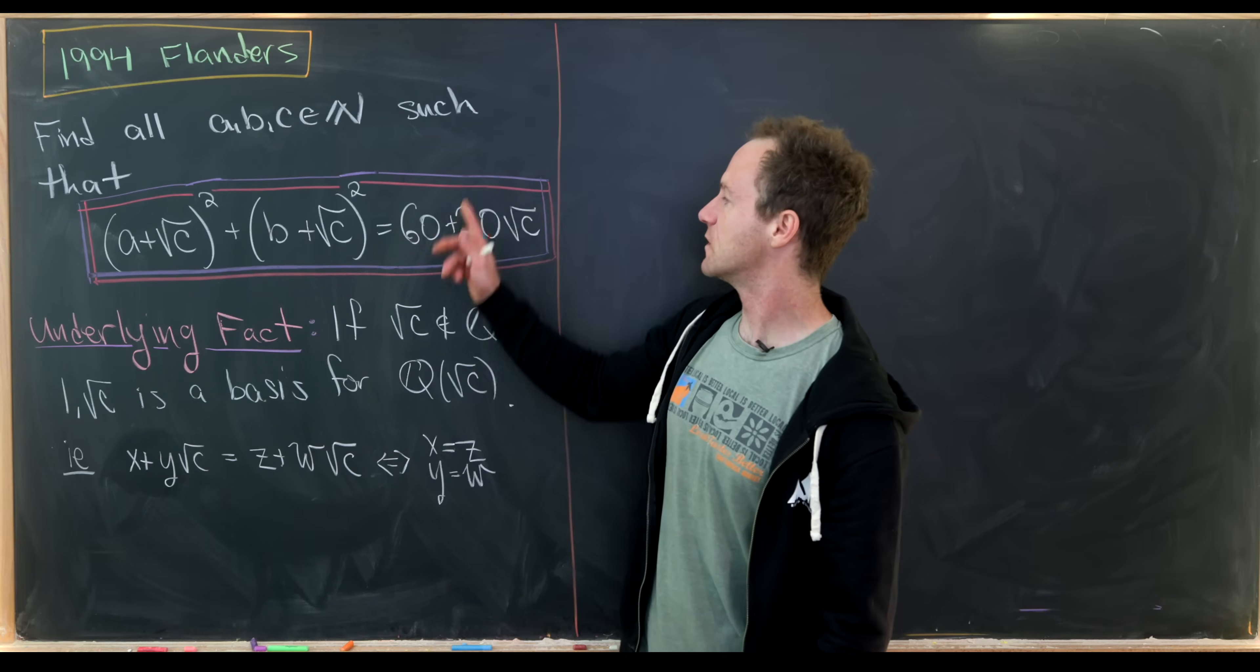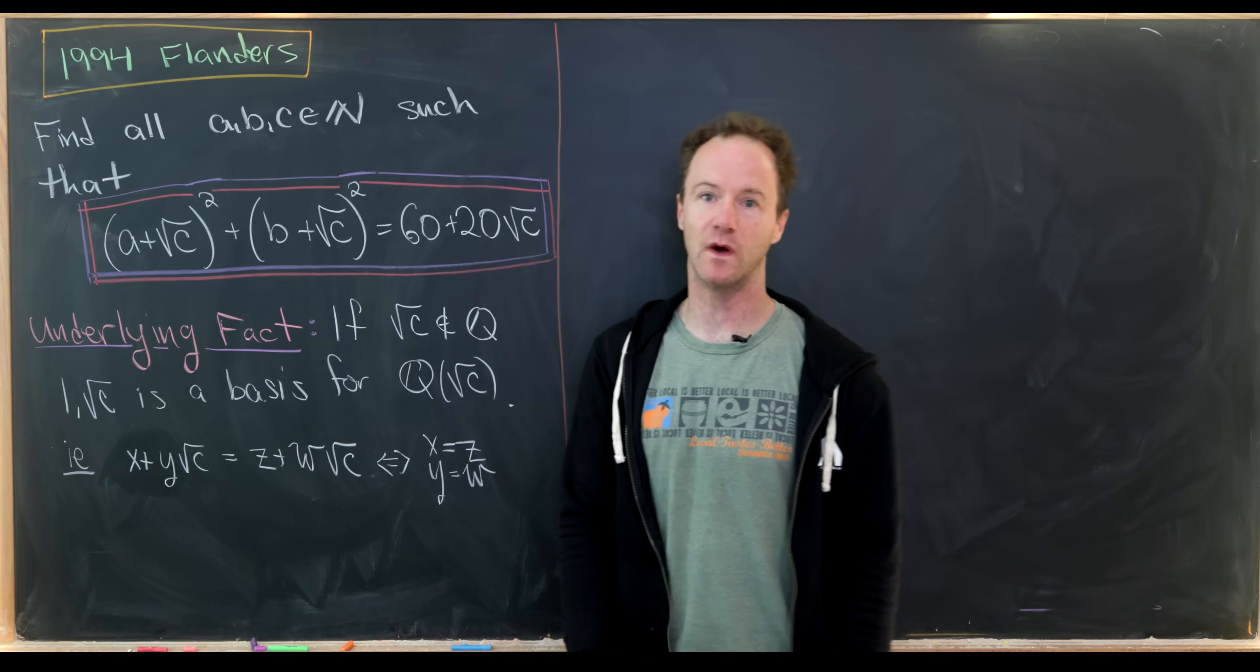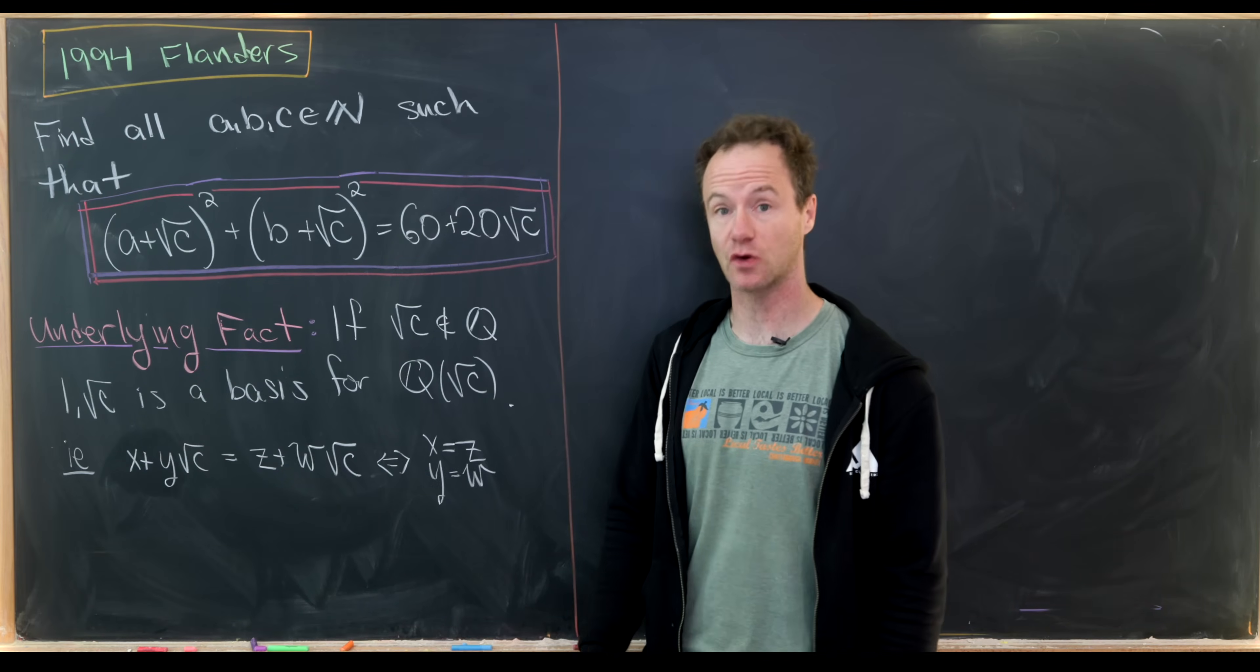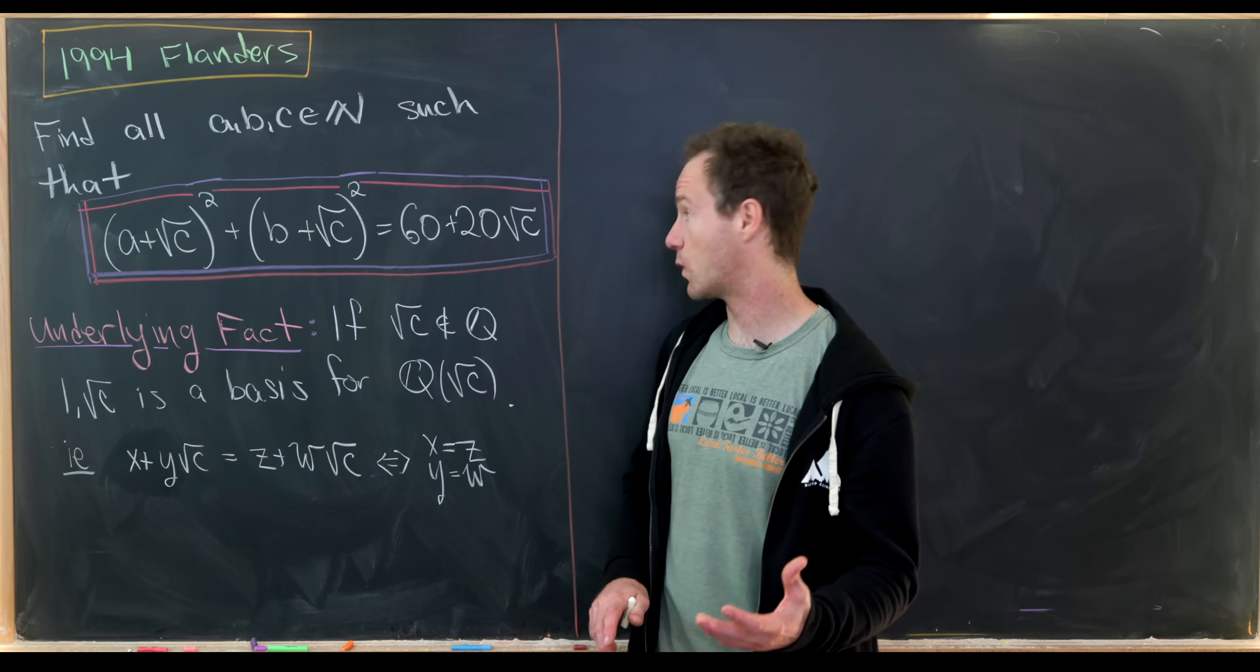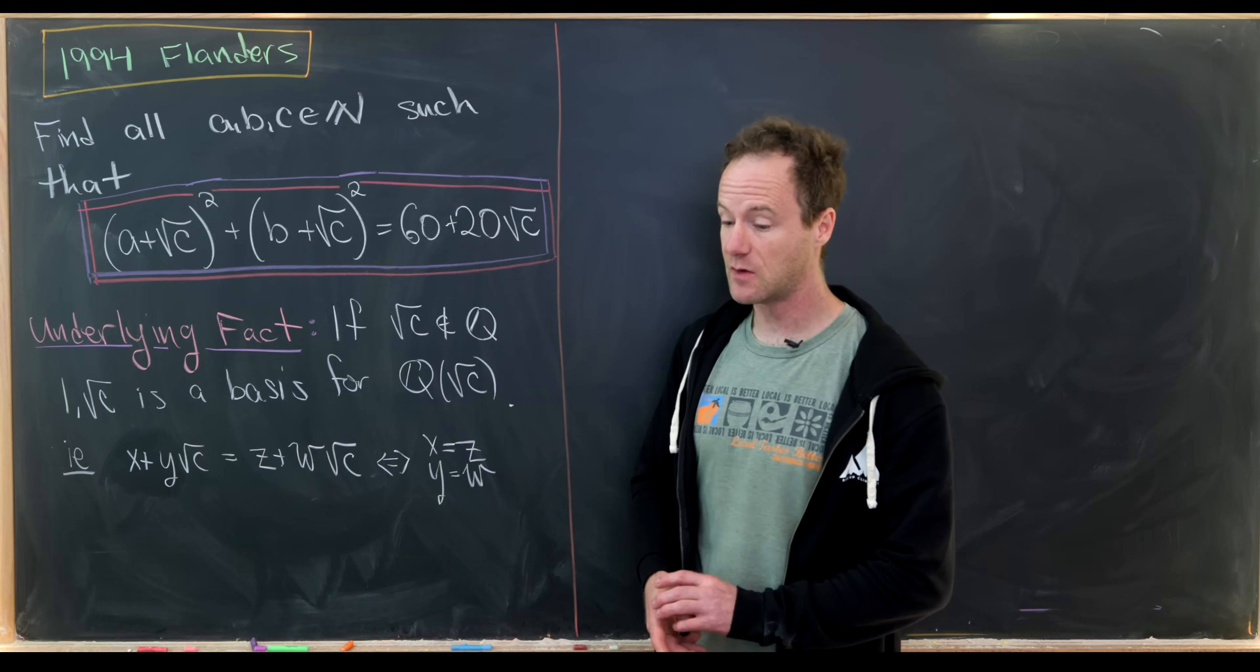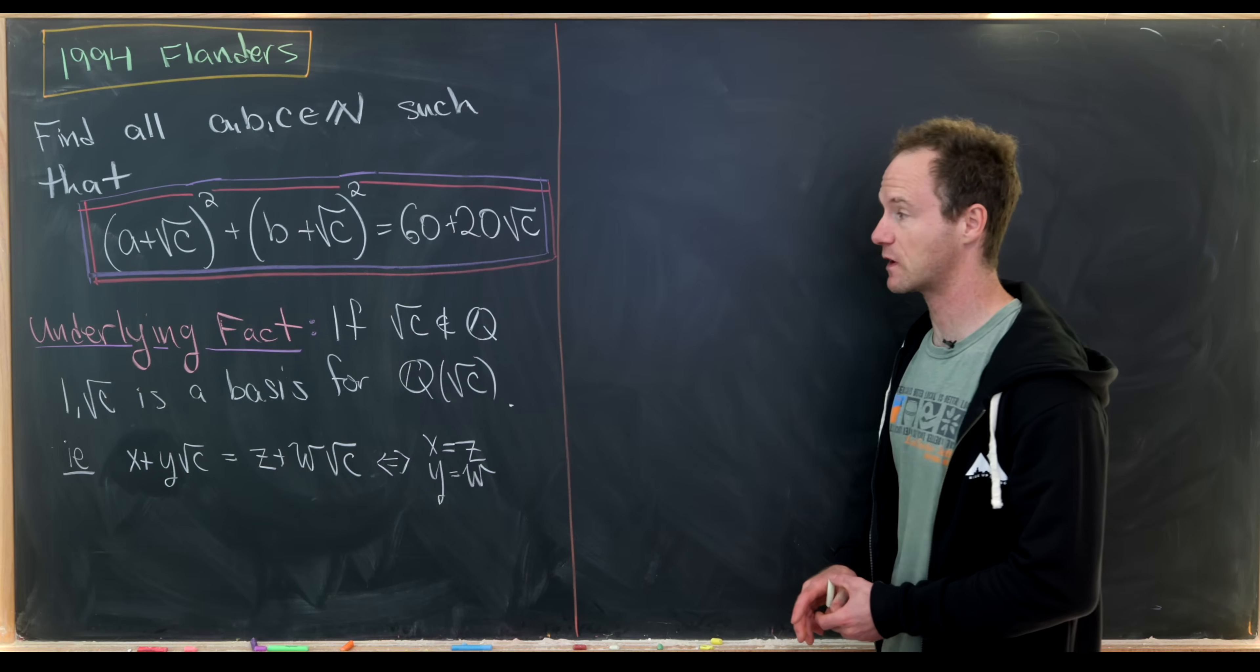Then, we want those to satisfy the following equation. We have a plus the square root of c squared plus b plus the square root of c squared equals 60 plus 20 times the square root of c.